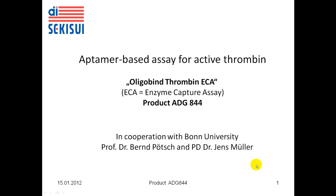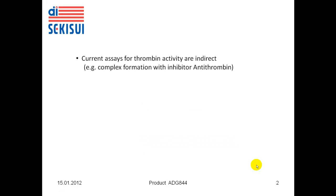The Oligobind Thrombin assay is for the determination of active thrombin in plasma samples, and it is based on a thrombin-specific aptamer, which is an oligonucleotide with specificity for thrombin. The current assays for thrombin activity are mostly indirect — for example, thrombin formation is measured via complex formation with the inhibitor antithrombin, the so-called Thrombin-Antithrombin complex ELISA, or TAT-ELISA.